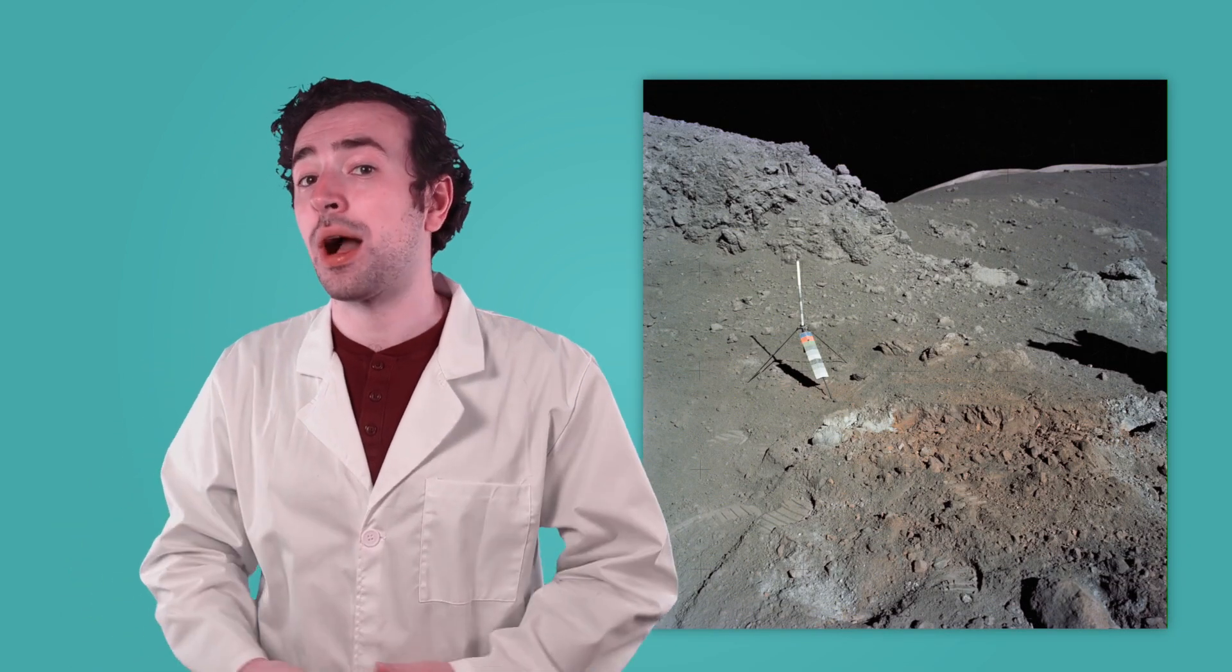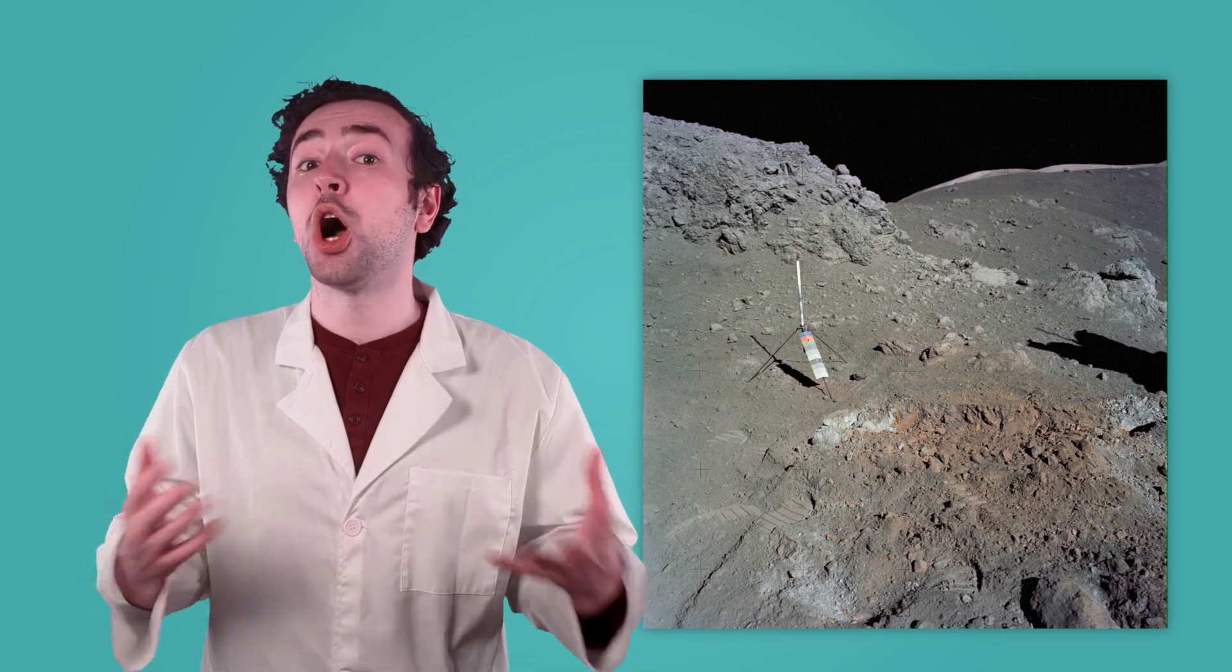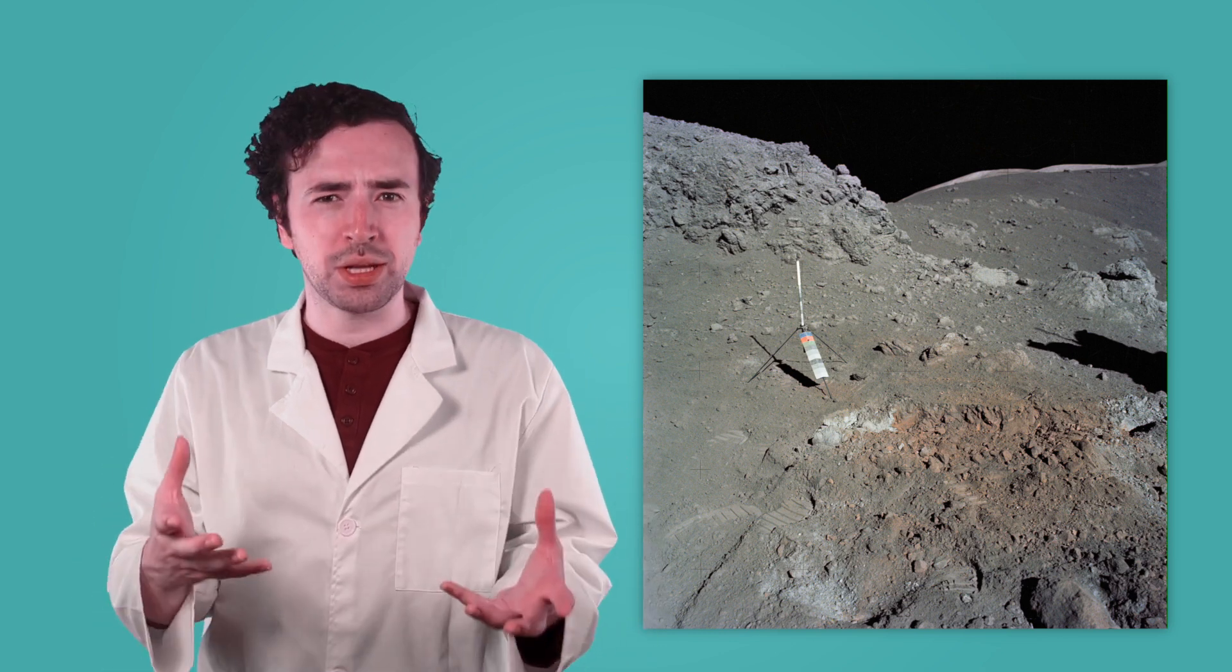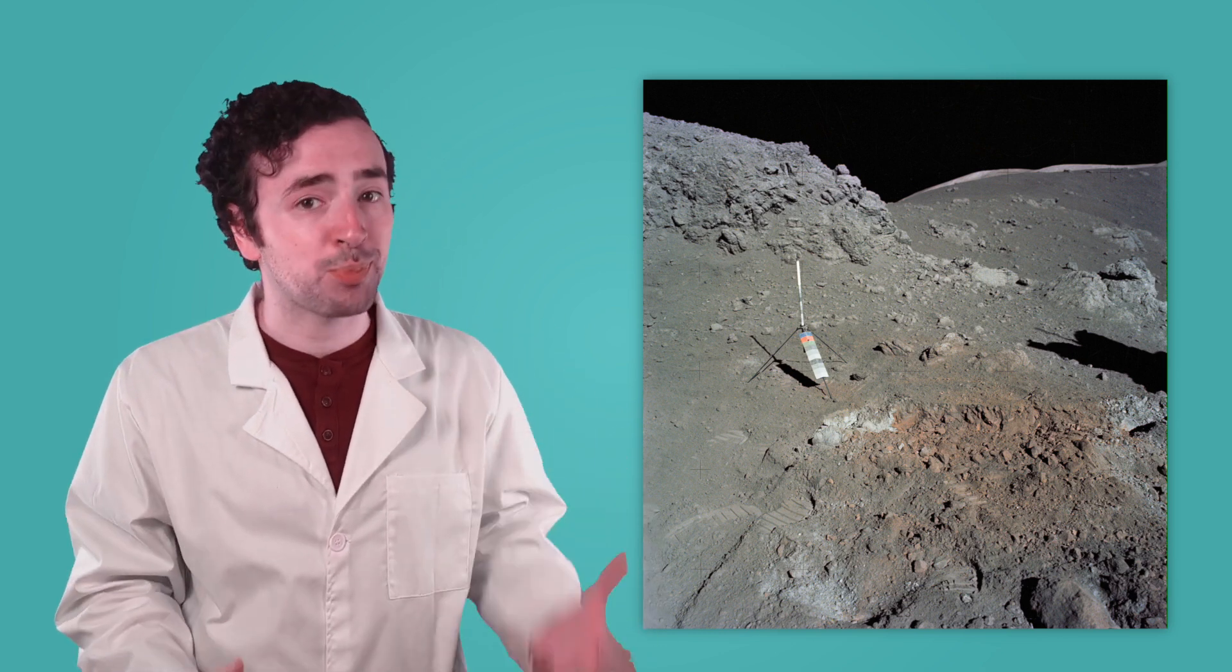The moon might look smooth and glowing from far away, but up close, it's a dusty, rocky place. Its surface is covered with loose material that's been broken down over time by impacts from space rocks. If you could explore different parts of the moon, you'd notice some big differences depending on where you land. Take a second to look at this image of the moon. What do you notice? Pause the video and jot down what you see in your guided notes.